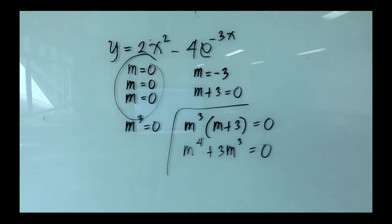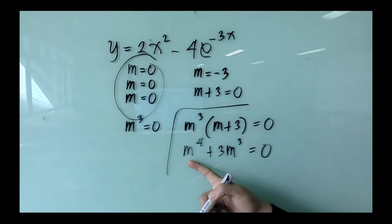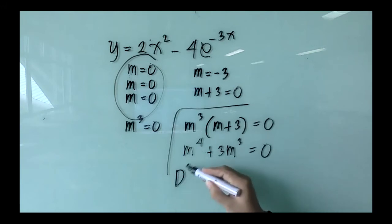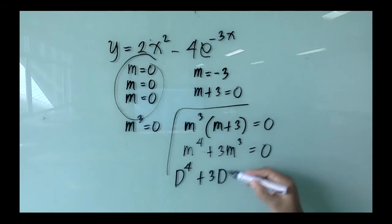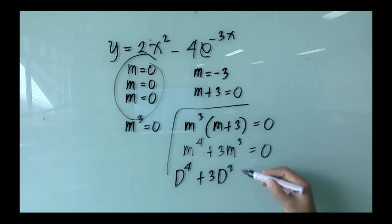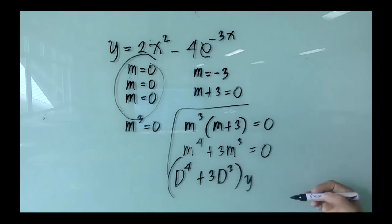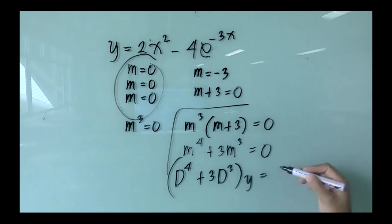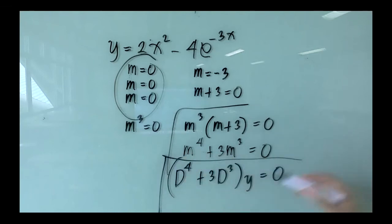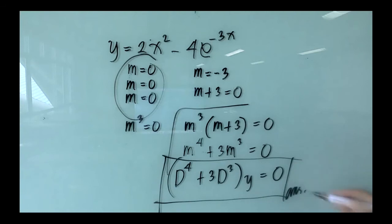Replacing m by d, the differential equation becomes d⁴ + 3d³ applied to y equals 0. This is the homogeneous linear differential equation for example B.